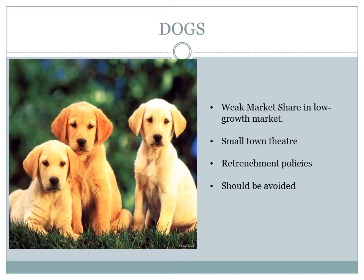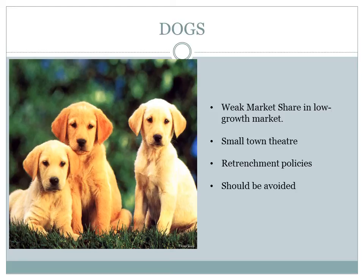Dogs represent businesses having weak market shares in low-growth markets. For instance, a small-town theater is a business with a low market growth rate and small market share. They neither generate cash nor require huge amounts of cash. Due to low market share, these business units face cost disadvantages. Generally, retrenchment strategies are adopted because these businesses can gain market share only at the expense of competitors or rival firms. These business firms have weak market share because of high cost, poor quality, and ineffective marketing, among others. Unless a dog has some other strategic aim, it should be liquidated if there are fewer prospects for it to gain market share. The number of dogs should be avoided and minimized in an organization.